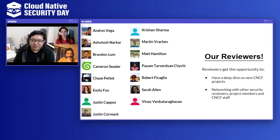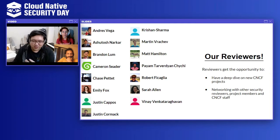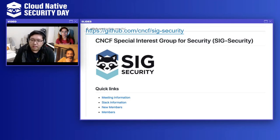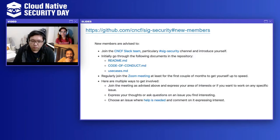Shout out to all the security reviewers we've had since we started security assessments — thank you so much. We wouldn't have been able to complete the first five assessments, which was our first security assessment milestone. SIG security is mainly based on our GitHub repository. Everything is governed there — meeting information, stack information, all of it. There is a new members page that tells you a little bit more about SIG security, what we do, as well as how to add yourself as a member to the group.